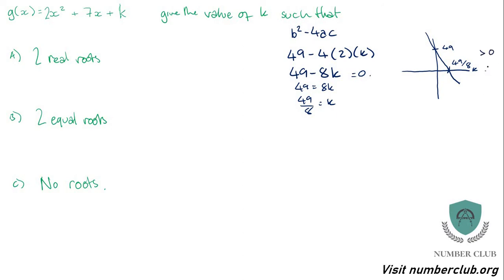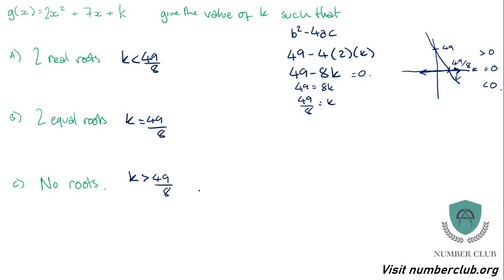Two real roots happen when the discriminant is greater than 0, which is when k is less than 49 over 8. Two equal roots — one solution — is exactly when k equals 49 over 8. No roots is when the discriminant is less than 0, which is when k is greater than 49 over 8. Nice and easy, but you must graph that discriminant.